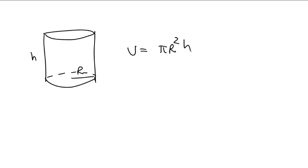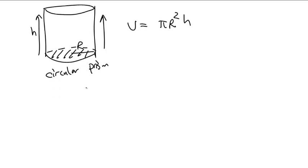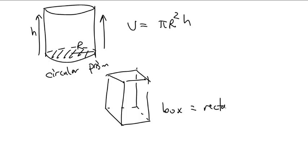I like to think of this as also known as a prism, sort of a circular prism. A prism is anything that goes straight up and down from a base. Like if you had a square base and you went straight up and down from it, if you had a rectangular base, you would end up with some sort of box. A box is a rectangular prism.